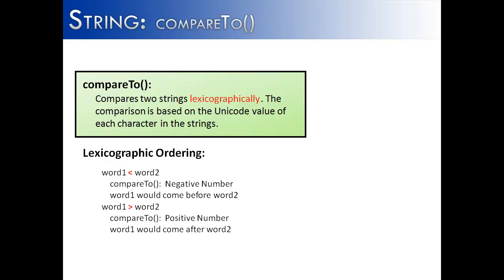The second one is, what if word one is greater than word two, kind of like zebra is greater than ape. You'd get a positive number and word one would come after word two. Finally, if they're exactly the same, they have all the same letters, you're going to get a zero and word one is going to be equivalent to word two.